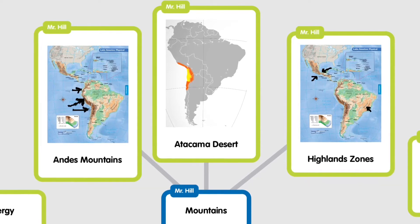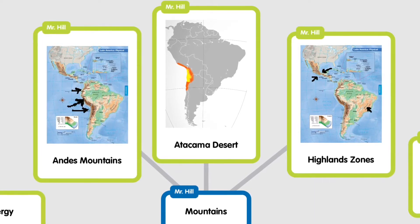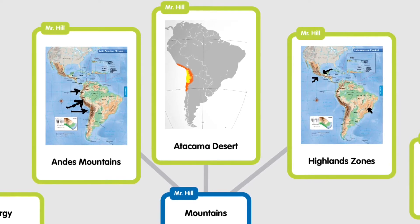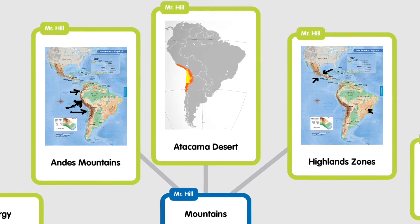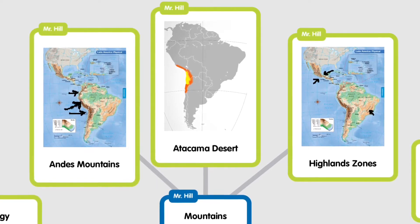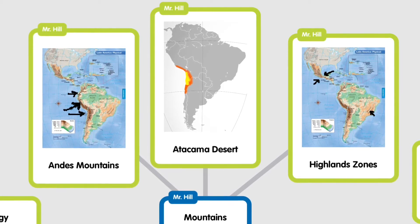The first one we're going to look at is the Andes Mountains. The Andes Mountains run along the western portion of North, Central, and South America. It runs all the way along the coast and it forms a western barrier to movement. You're not going to have people go from the west to the east because of this.